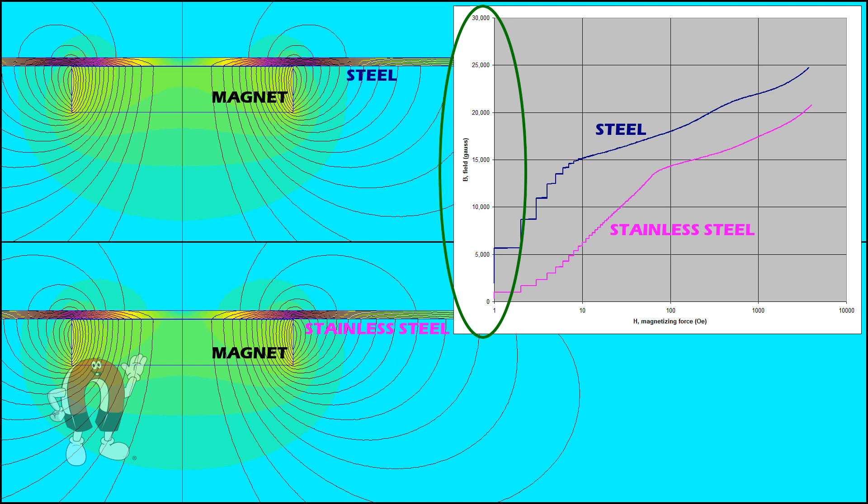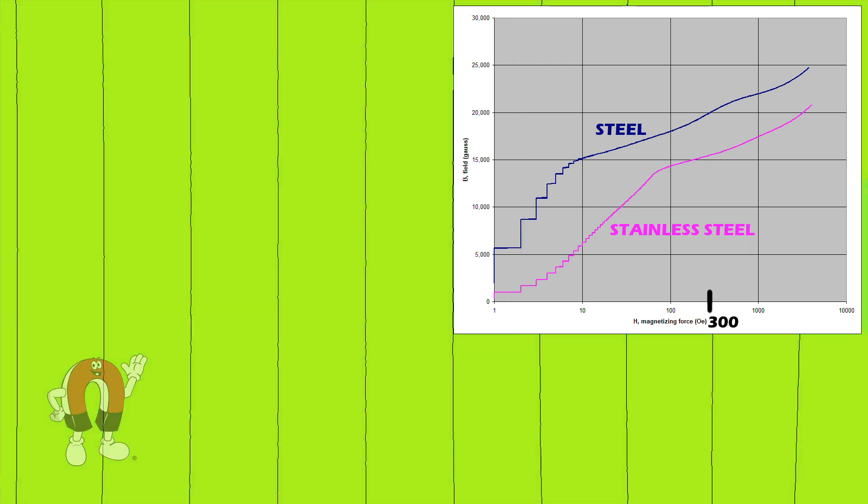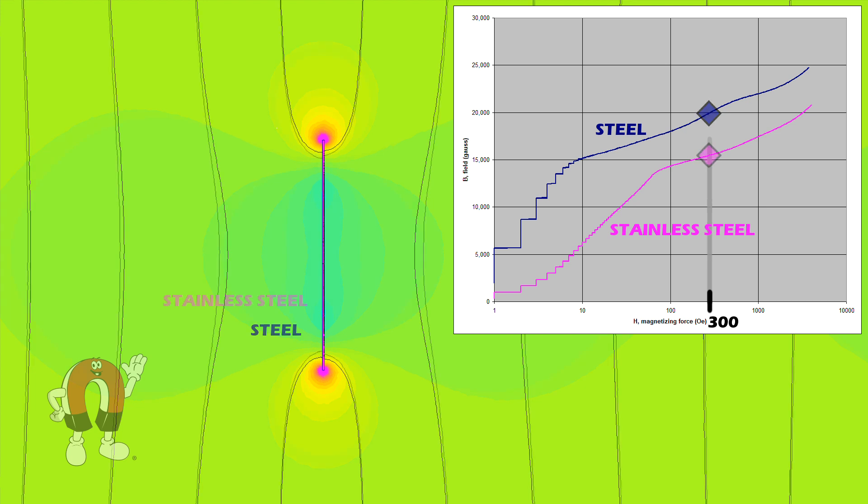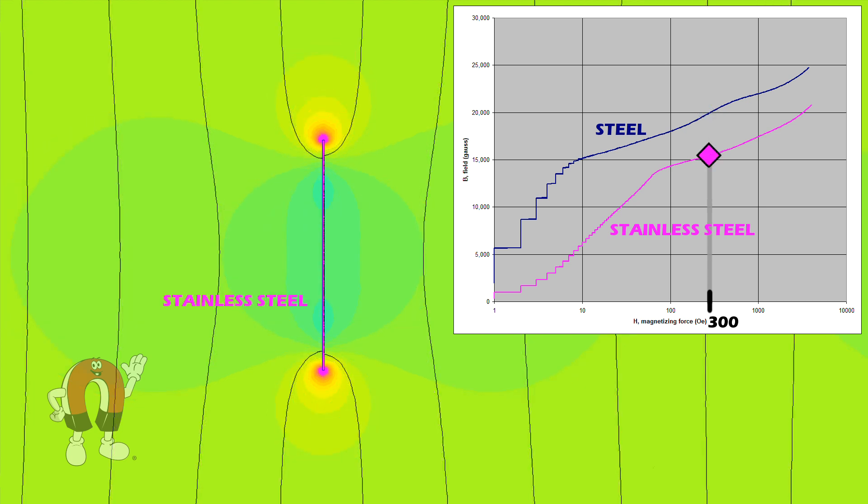Imagine what happens if we stick these steel samples into a room with a uniform magnetic field of, say, 300 Oersted. This means we might expect to see a field strength of almost 20,000 Gauss inside the regular steel. Inside the stainless steel, it's weaker, perhaps just over 15,000 Gauss.